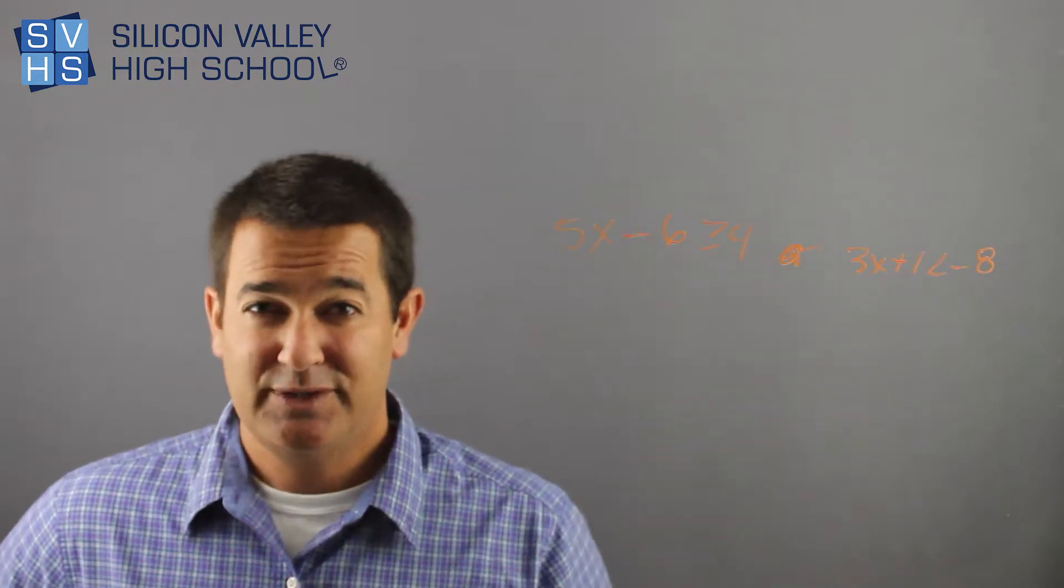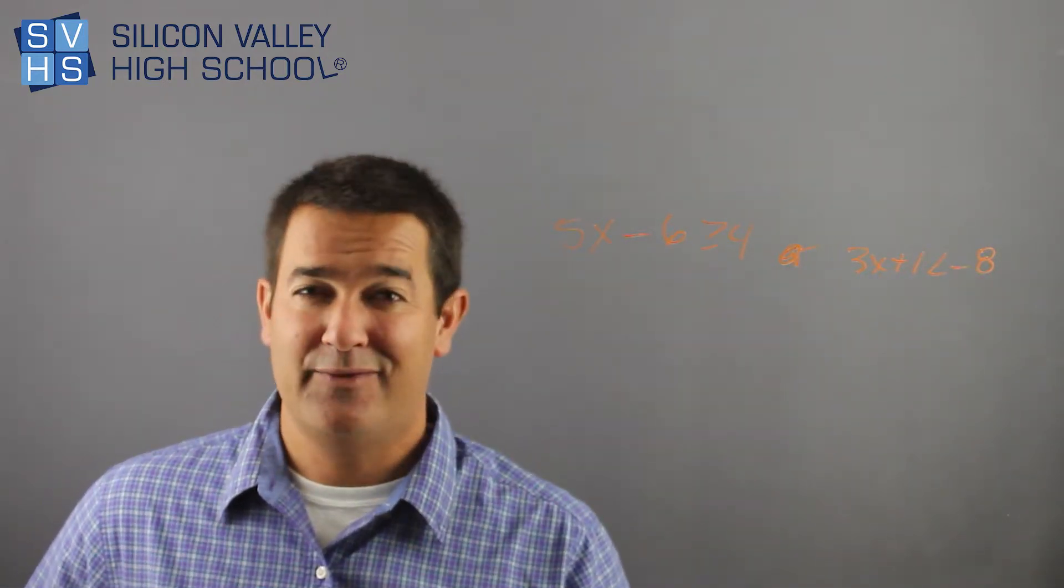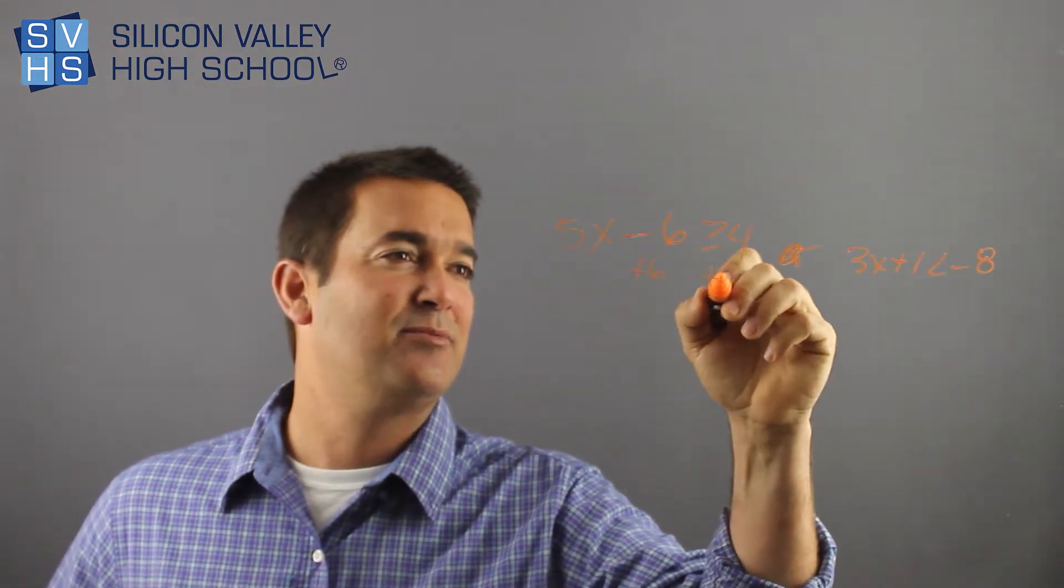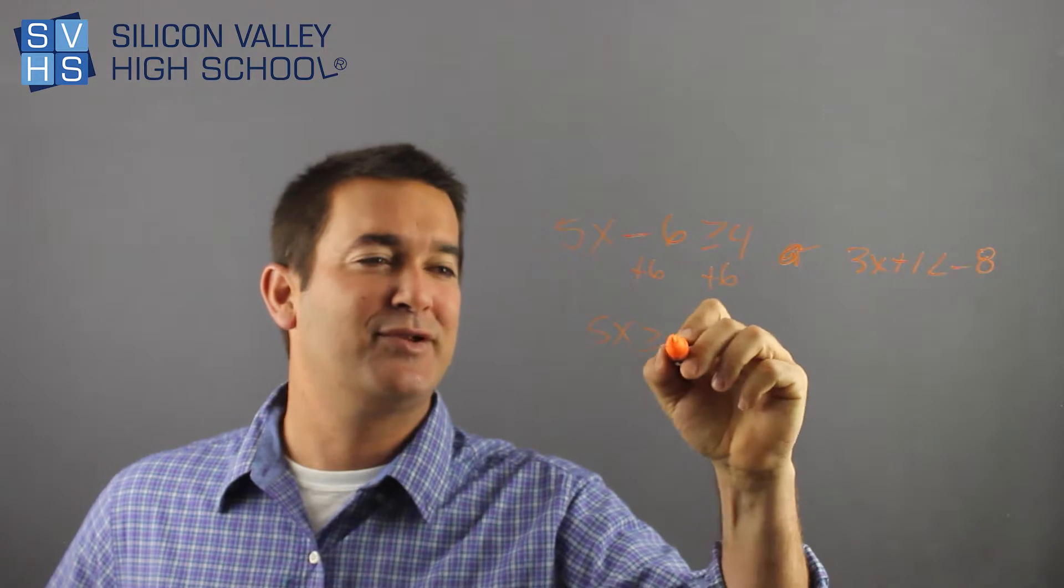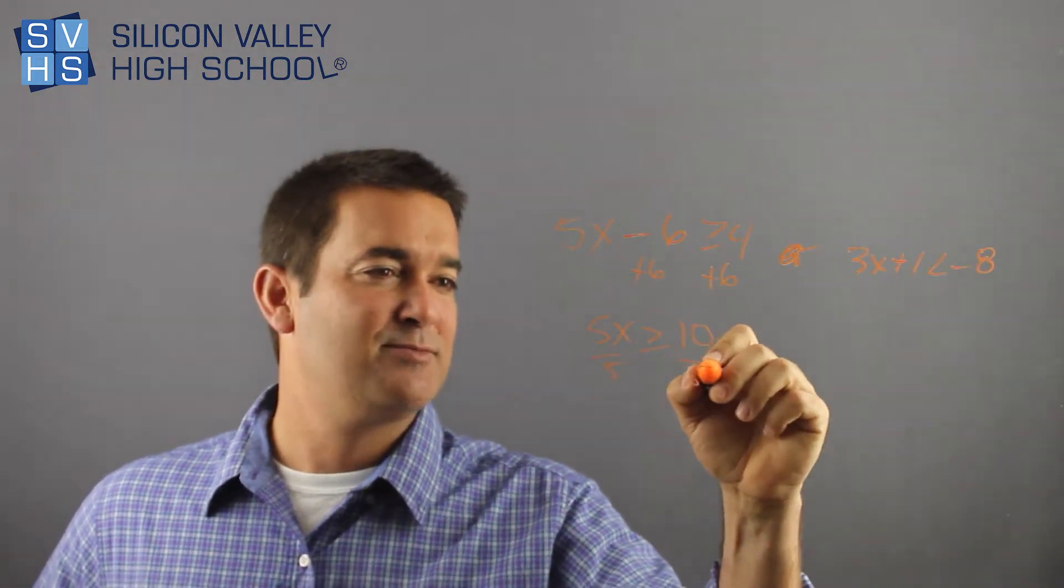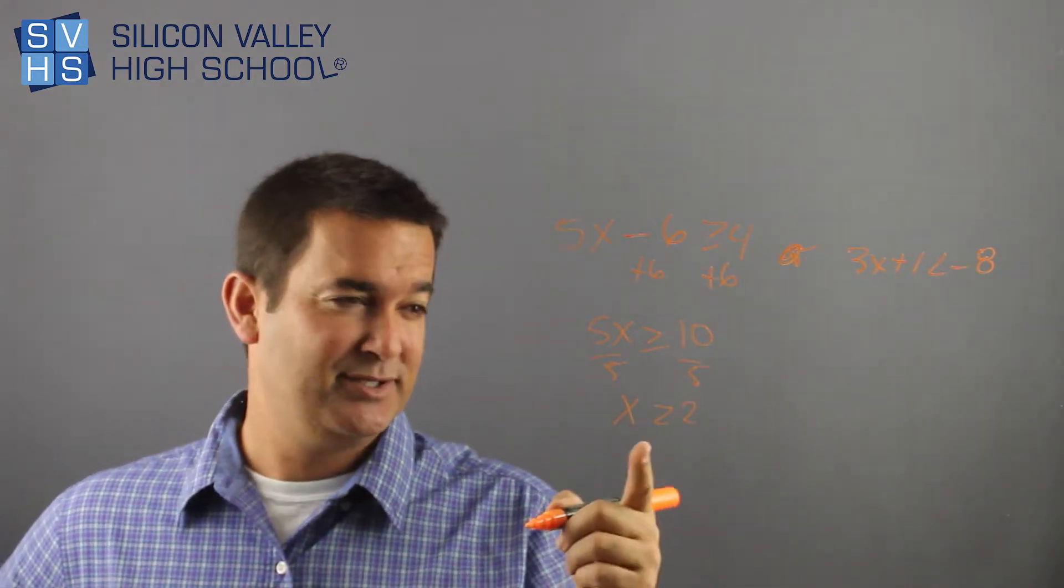When you solve this, you don't do the trick where you do them both at the same time. In this case, you have to do them separately anyways. I want my x alone, I'm going to get the six out of here, plus six. 5x is greater than or equal to ten, divide both sides by five. It's pretty straightforward. So there's one, you have x is greater than or equal to two.